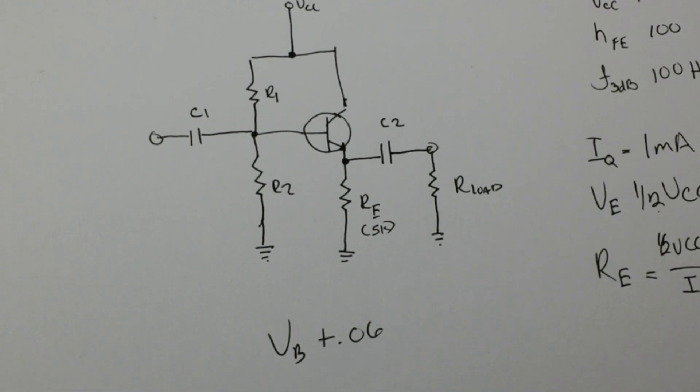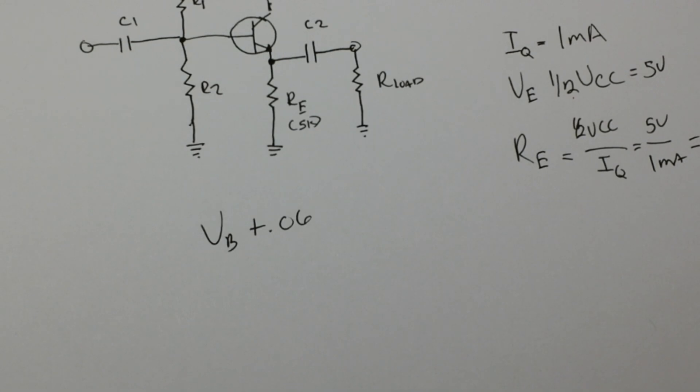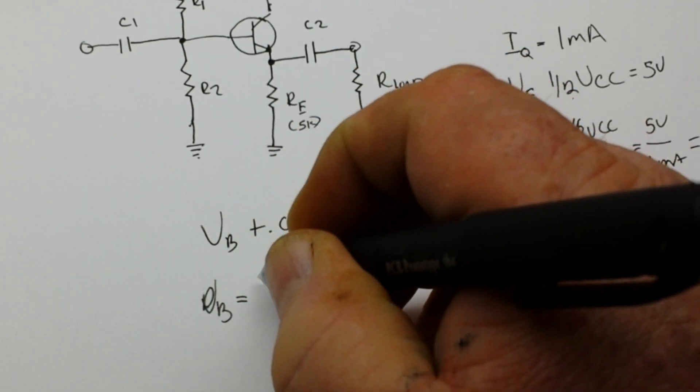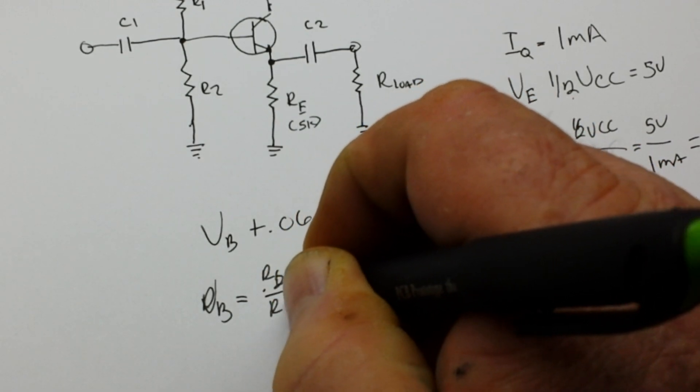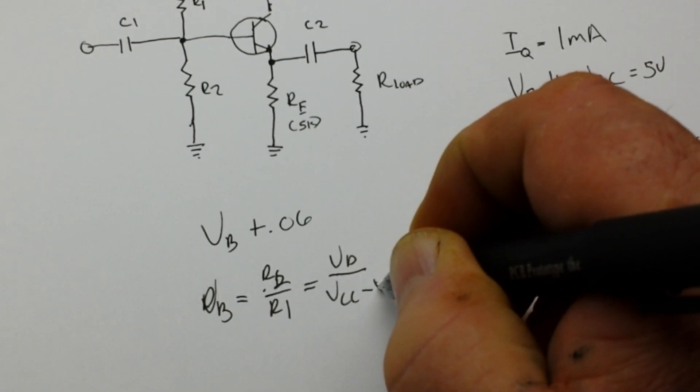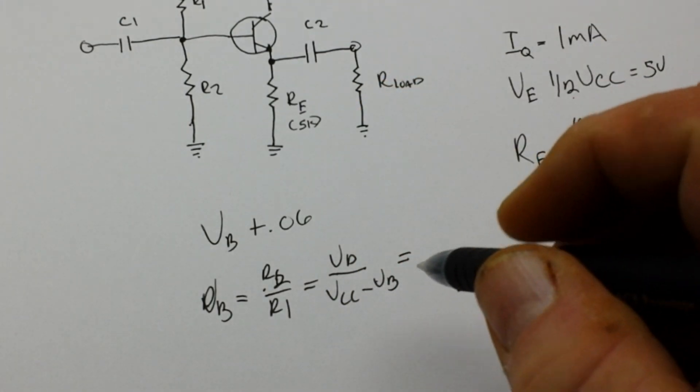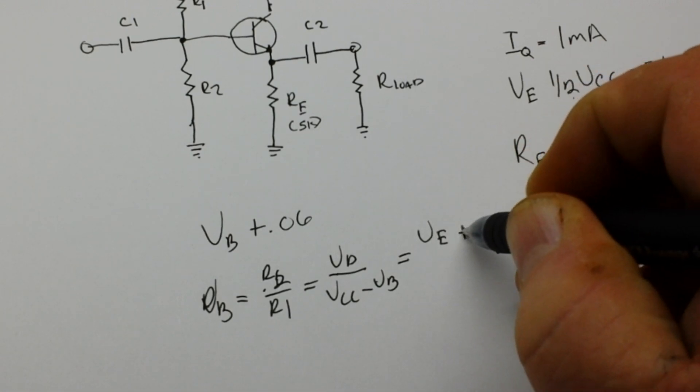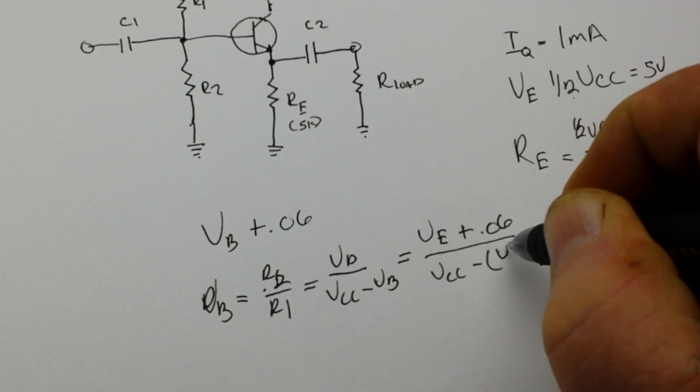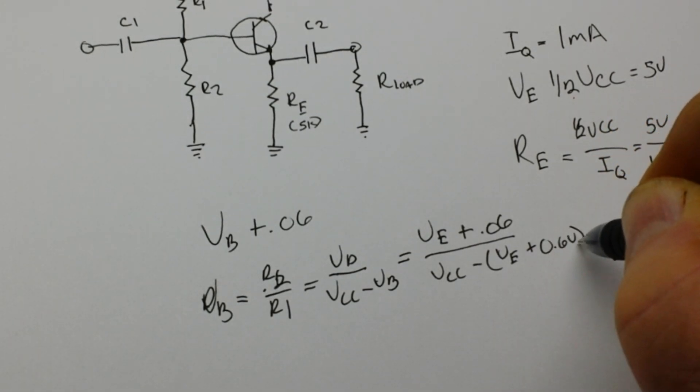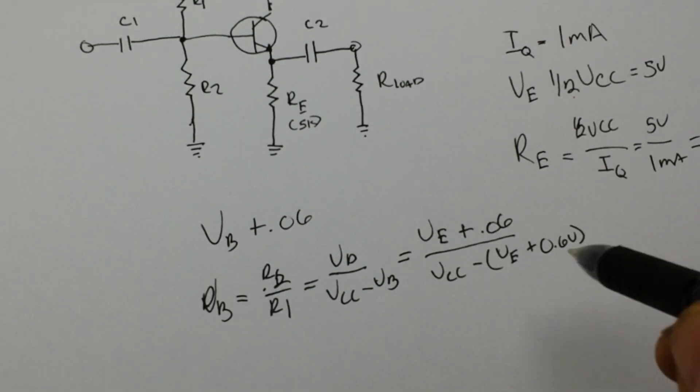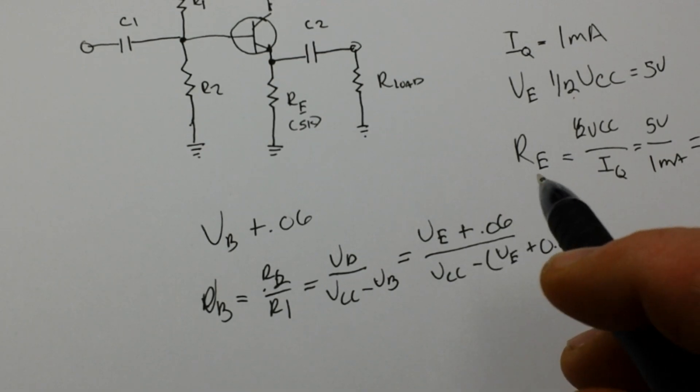It's real simple. R1 and R2 ratio is what is going to give us what we want. So to set our VB we simply say VB equals R2 over R1, and that is VB over VCC minus VB, or the information we already have: VB plus 0.6 over VCC minus VB plus 0.6 volts. Now you can make an approximation here and just let R1 equals R2. That's going to just forget about that little 0.6 voltage drop and it's not really a big deal in most cases.